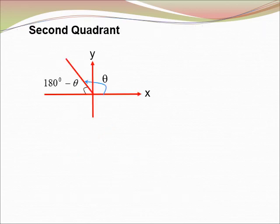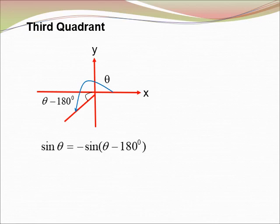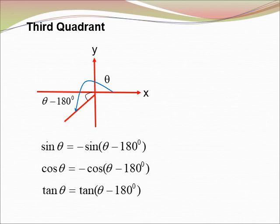For the second quadrant: sin theta equals sin(180° − θ), and cos theta equals negative cos(180° − θ). For the third quadrant: sin theta equals negative sin(θ − 180°), cos theta equals negative cos(θ − 180°), and tangent theta equals tangent(θ − 180°).